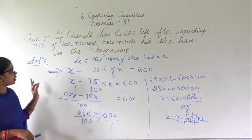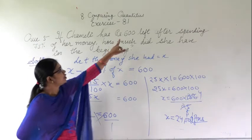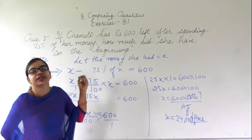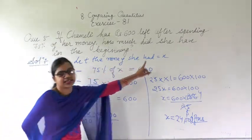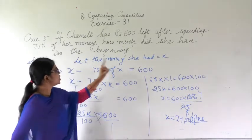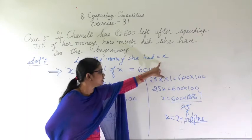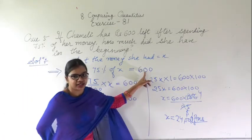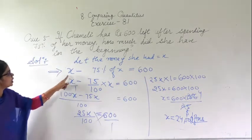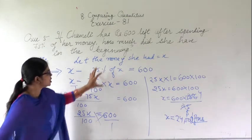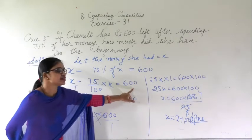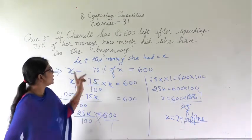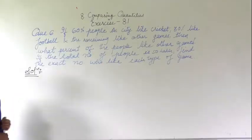So in this question, there was a girl named Chamelee. She was left with 600 rupees after spending 75% of the money she had. We let the total money be x. 75% of that total money she spent, and she was remaining with 600. Taking the LCM and solving, I got x equal to 2400 rupees. This is question number 6.